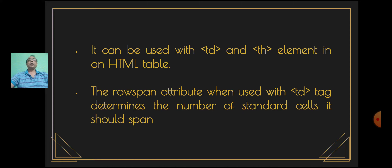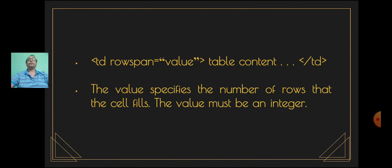The rowspan attribute when used with the td tag determines the number of standard cells it should span. The syntax is: td rowspan="value". The value specifies the number of rows that the cell fills. The value must be an integer.